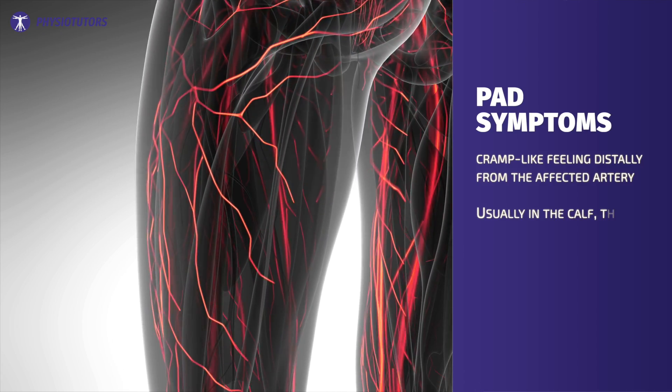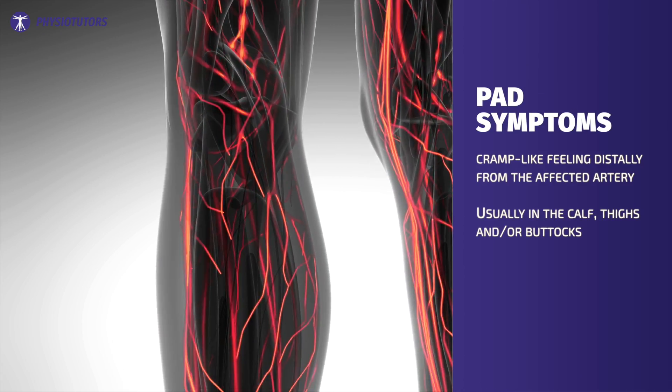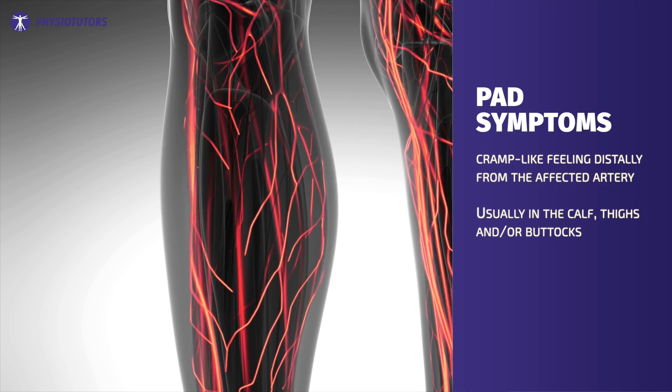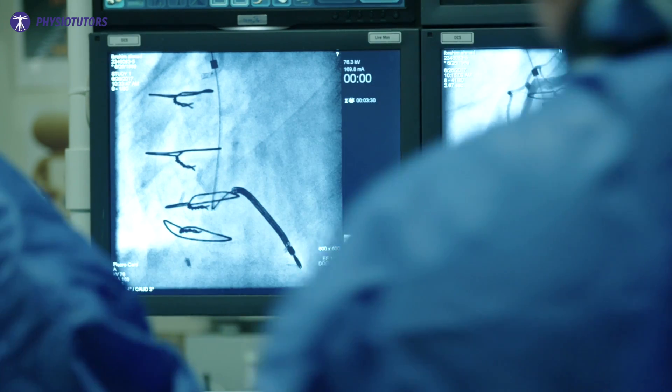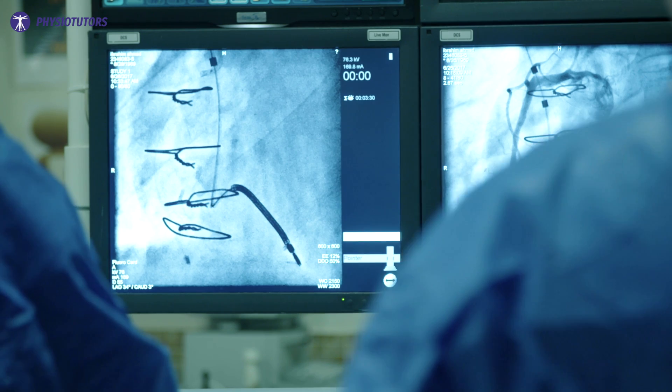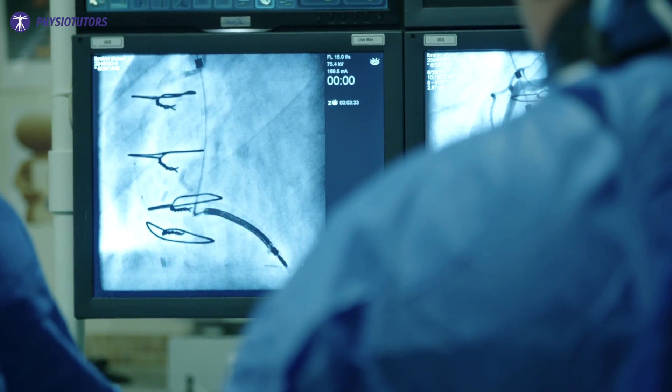Major risk factors include diabetes, smoking, and dyslipidemia. Symptoms include a cramp-like feeling distal to the occlusion. Complaints usually occur in the calf, but thighs and buttocks can be affected as well, although less frequently. The pain abolishes with rest when blood supply is no longer inadequate.